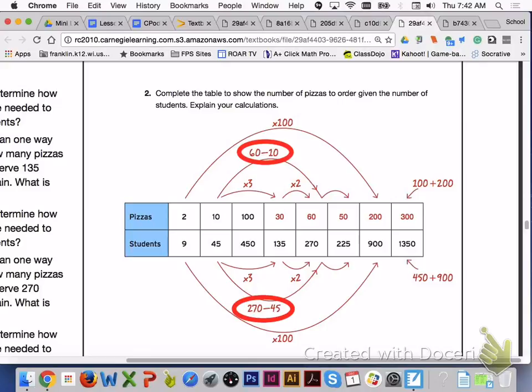For the ratio of 50 to 225, I subtracted two corresponding ratios. For the ratios, 60 minus 10 gives me 50 and 270 minus 45 gives me 225.